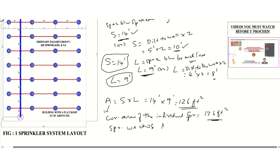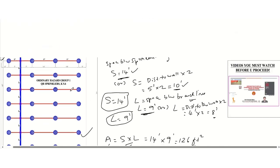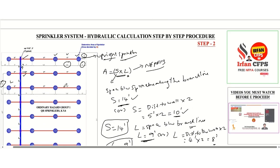The sprinkler we choose has an area of 126 square feet. If we apply the same rule as per NFPA 13 to each sprinkler in our drawings, we are going to get the same 126 square feet, since this complete sprinkler system is typical. I hope you understand this second part — thank you.